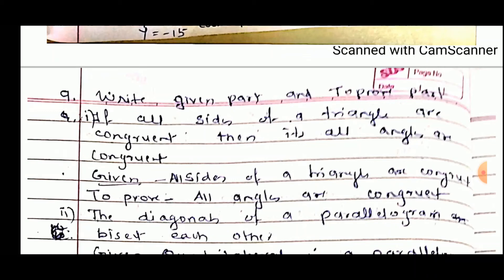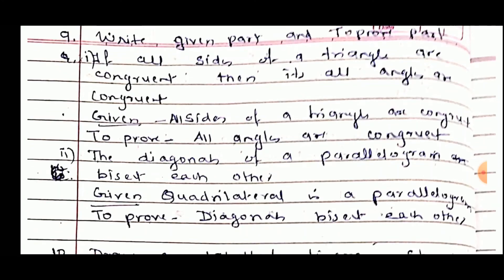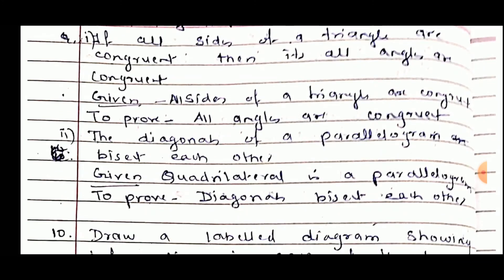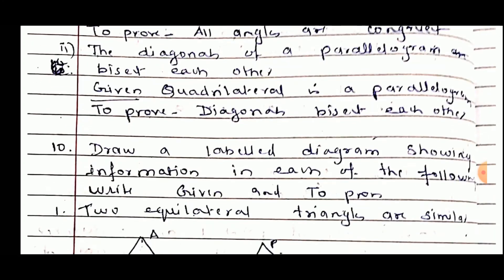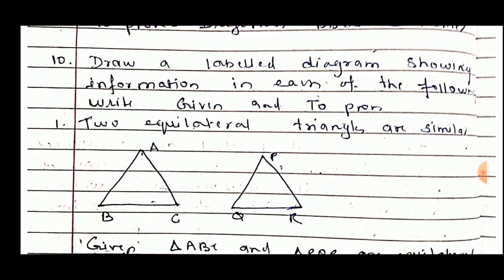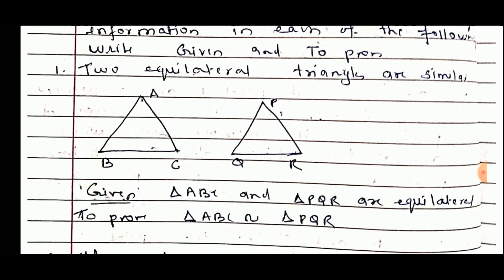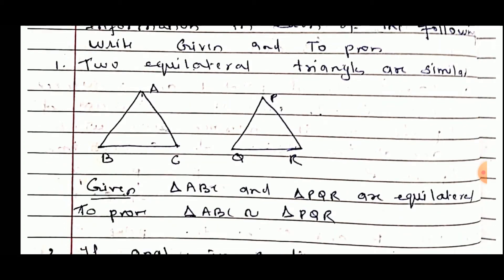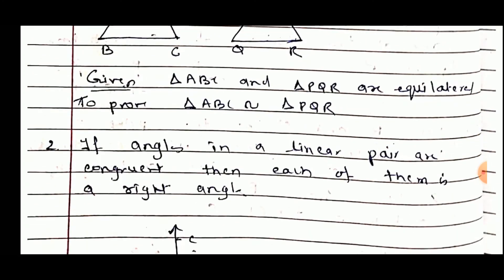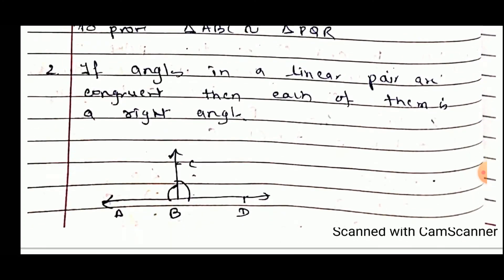Write the given part and the to-prove part. If all sides of a triangle are congruent, then all its angles are congruent — given: all sides of a triangle are congruent; to prove: all angles are congruent. The diagonals of the parallelogram bisect each other — given: the quadrilateral is a parallelogram; to prove: the diagonals bisect each other. Two equilateral triangles are similar — given: triangle ABC and triangle PQR are equilateral; to prove: triangle ABC is similar to triangle PQR.